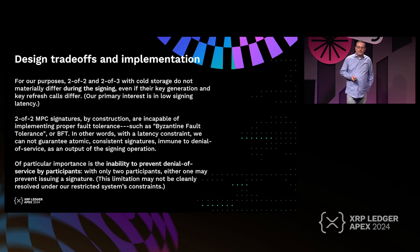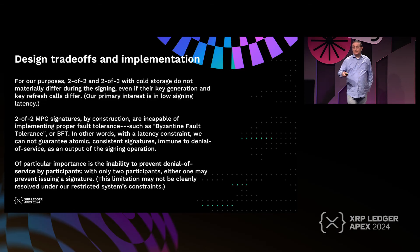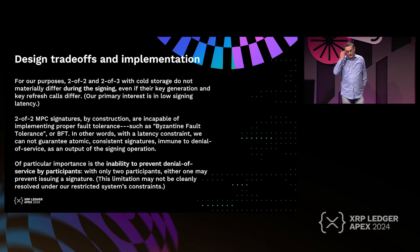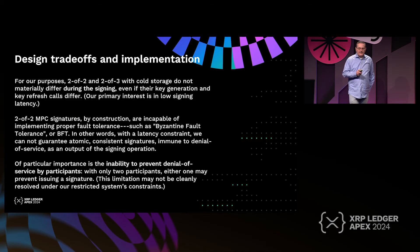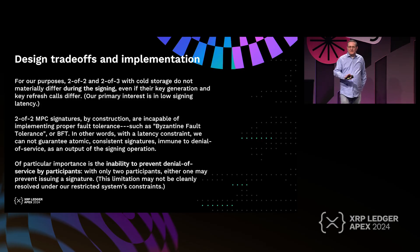MPC literature assumes that nobody trusts anybody, and Byzantine fault tolerance — where the system tolerates some loss — is a prereq for MPC assumptions. The real problem with two-of-two is that any single party can prevent a signature from being issued. In the digital assets industry this isn't always a bad thing: if the price of not allowing a malicious million-dollar transfer is a denial-of-service where you can't transact but nobody steals your money, that's a gray area. When restricting yourself to low latency, you cannot solve both simultaneously — it's something you have to live with.